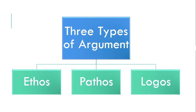Once you understand the basics of rhetoric — audience, purpose, and tone — you can start to think about the three types of argument, also known as the three pillars of argument. These are Greek concepts thought of by Aristotle: ethos, pathos, and logos. I'm going to break down each one of these types of argument and talk about how it might be effective or persuasive to help readers do or think or believe whatever the author is trying to get them to do.